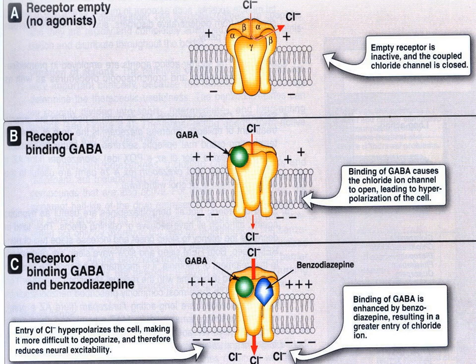This picture further explains the mechanism of action of benzodiazepines. Part A indicates when the receptor is empty — that means there is no agonist — so the empty receptor is inactive and the coupled chloride channel is closed. Part B means when the receptor binds with GABA; binding of GABA causes the chloride ion channel to open, leading to hyperpolarization of the cell. Part C means when the benzodiazepine binds to the GABA receptor; binding of GABA is enhanced by the benzodiazepine, resulting in greater entry of chloride ion, hyperpolarizing the cell, making it more difficult to depolarize, and therefore reducing neuronal excitability.